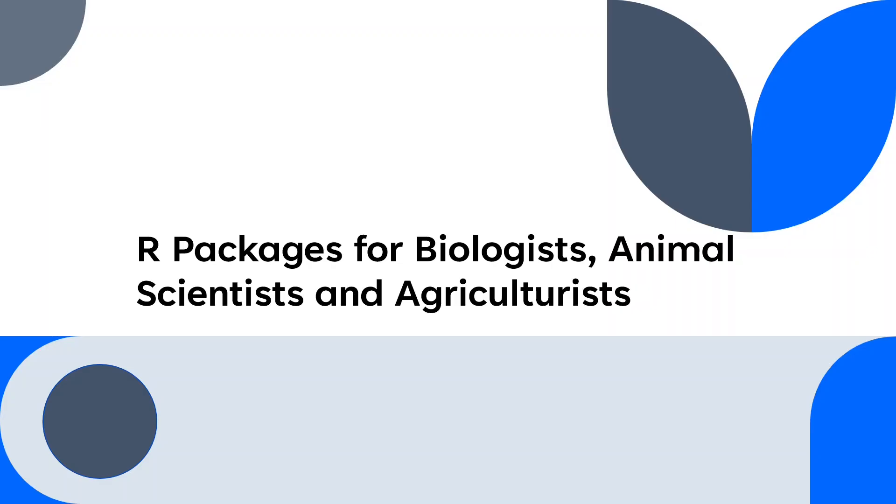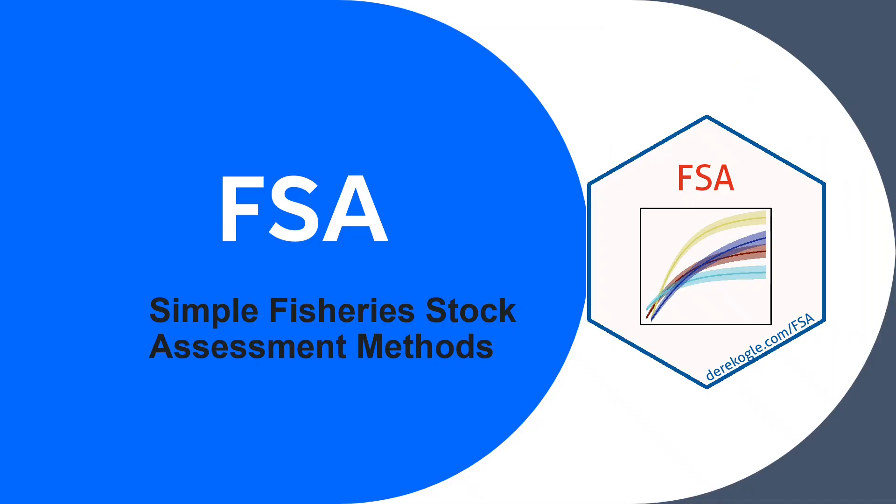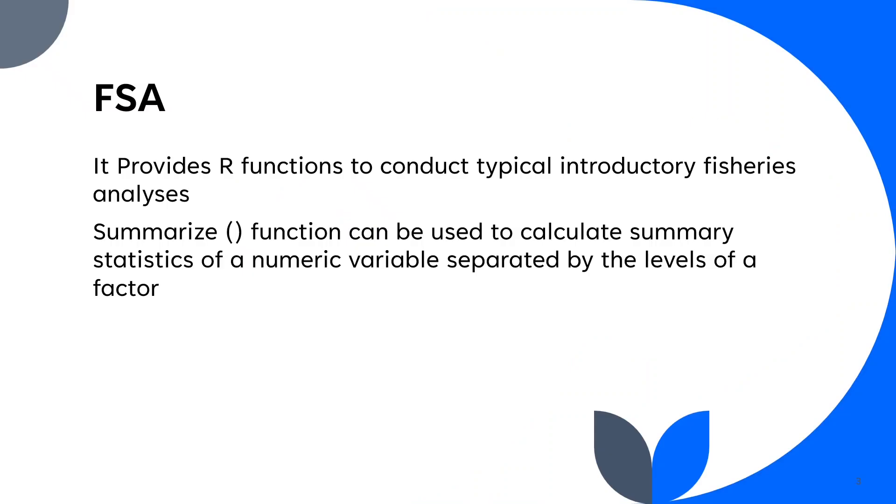Hello everyone and welcome back to my channel. In this video, I will talk about the 13 most useful R packages for biologists, animal scientists, and agriculturists. The first package is FSA, which is also known as Simple Fisheries Stock Assessment Methods. FSA package provides R functions to conduct typical introductory fisheries analyses. This package has also a summarize function which is very useful in different fields and can be used to calculate summary statistics of a numeric variable separated by the levels of a factor.